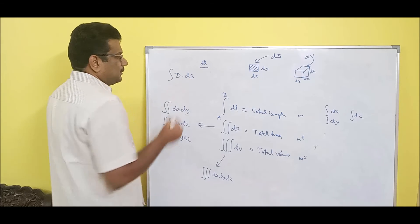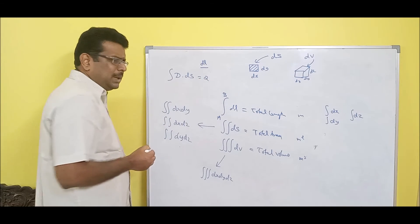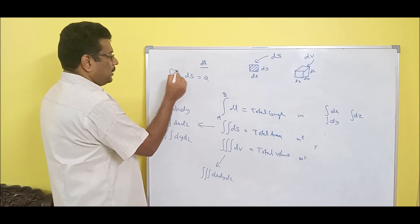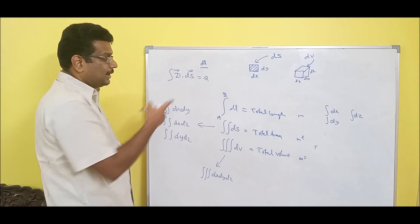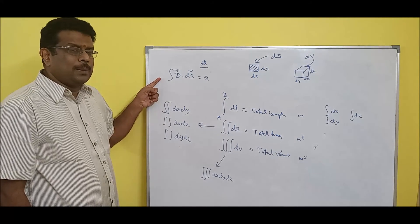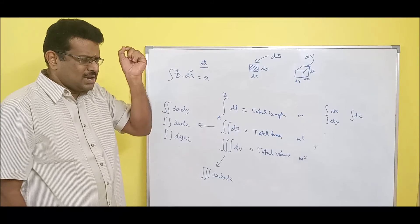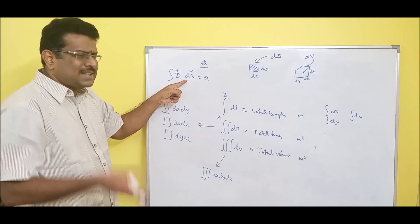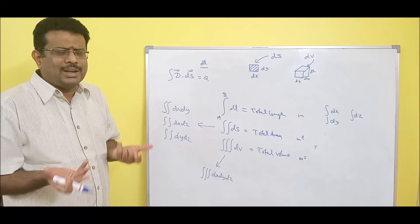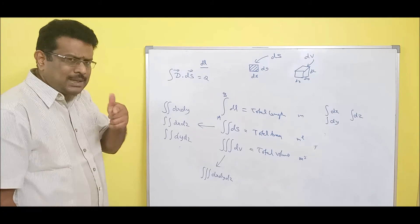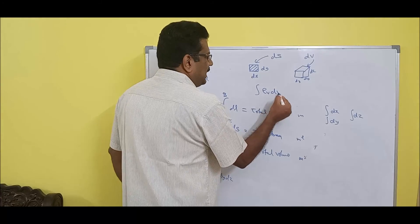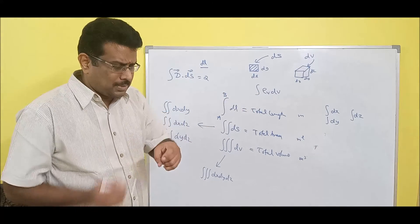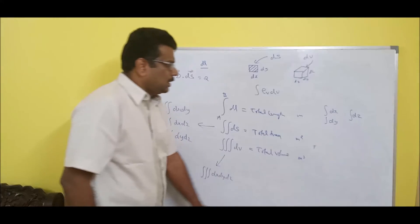Similarly, when I write integration of something dot DS, you should know DS is an area — length times breadth — so it is double integration. When I write integration of rho_v dV, you should know DV is volume, so it is triple integration. Please be serious about this — you should know whether it is single, double, or triple integration from the differential element used. Make a note of all of this.